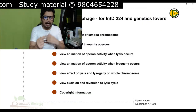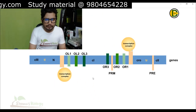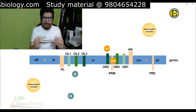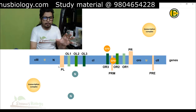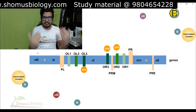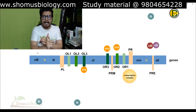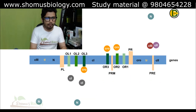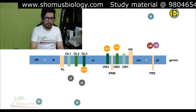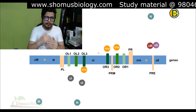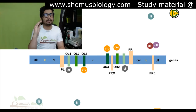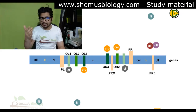Now for the lysogenic cycle: the process again starts with the transcription complex making N and CRO. But if N is produced in greater amounts, being an anti-terminator, it moves the transcription complex beyond the termination sites TL and TR, causing more C2 and C3 to be made. C2 and C3 together then allow transcription and translation of C1 from promoters PRE and PRM. As more C1 protein is built, it begins to bind to operator OL1 and OR1 first.